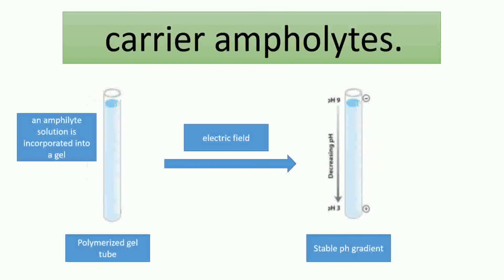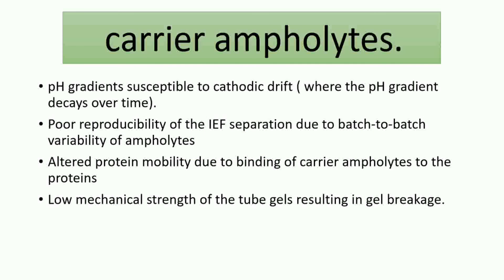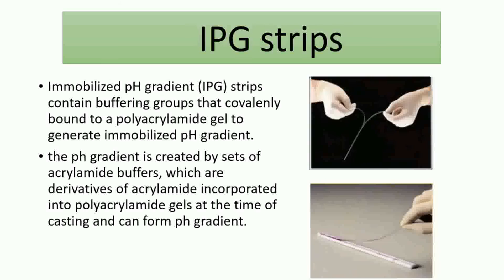However, this method faces many problems: cathodic drift, which is the decaying of the pH gradient over time; reduced reproducibility, meaning results vary from batch to batch; altered protein mobility; and low mechanical strength, which causes breaking in the gel. To overcome these problems, we use immobilized pH gradient (IPG) strips, which contain groups covalently bound to polyacrylamide gel to generate a stable pH gradient.